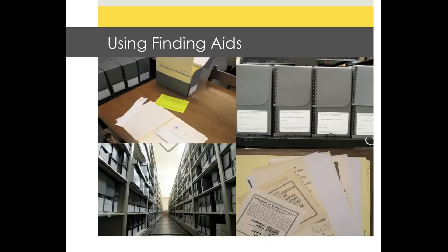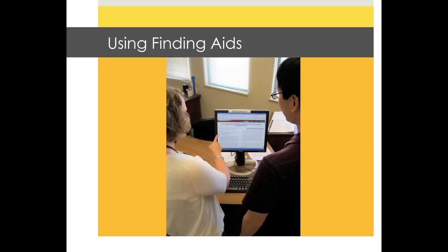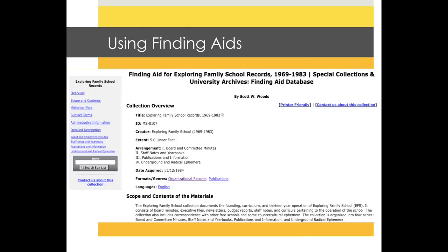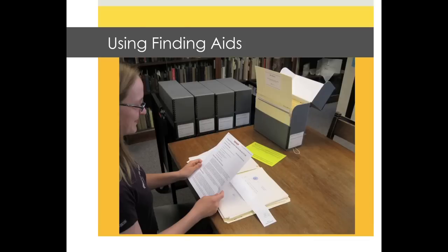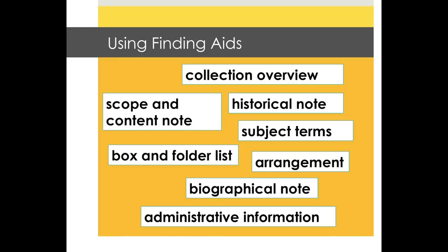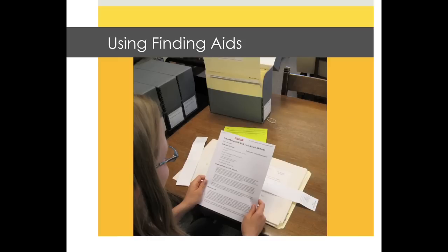Using archival and manuscript materials in special collections can seem overwhelming or confusing at first. Knowing how to use a finding aid is a skill that comes in handy when you are embarking on archival research. In this introduction, you'll learn what a finding aid is, how it can help you with research in special collections, the most important components of a finding aid, and some tips to keep in mind when using archival and manuscript collections.